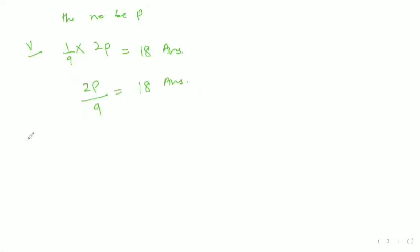Now the sixth part: the sum of twice the number and one fourth of the number is 81. Let the number be x. Twice the number is 2x, and one fourth of that number is x/4. So our equation is 2x + x/4 = 81.